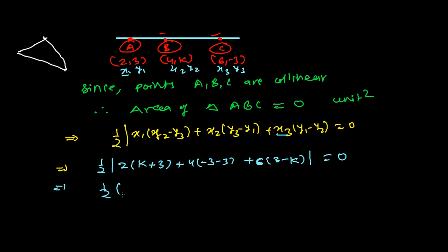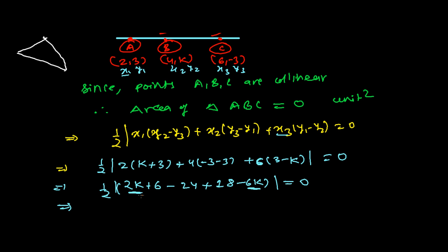Solving this: one-half times [2(k + 3) + 4(−6) + 6(3 − k)] = 0, which gives one-half times [2k + 6 − 24 + 18 − 6k] = 0. Combining like terms: 2k − 6k = −4k, and 6 − 24 + 18 = 0. So we get one-half times (−4k) = 0, meaning −4k = 0, therefore k = 0.